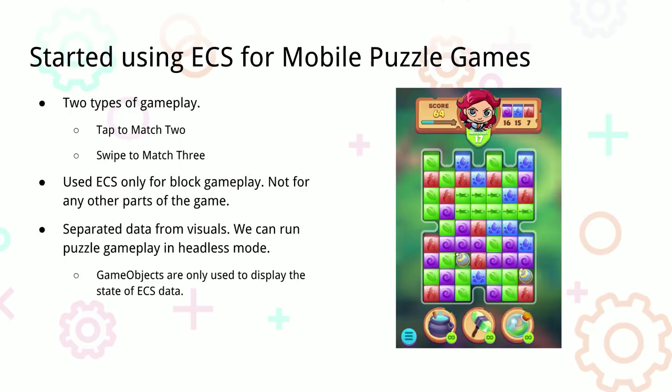I just want to clarify — we're only using ECS for the block gameplay. We're not using it for the rest of the game, like our stores. But I thought it worked pretty well for what we were using it for. We're separating the data from the visuals. We are definitely a hybrid ECS — we don't do any of our visuals in ECS. We do all the data, and the visuals just reflect the data found inside the ECS.